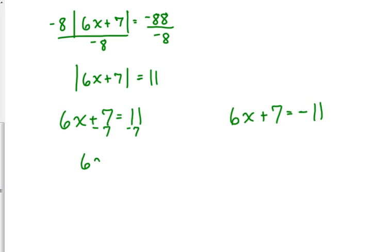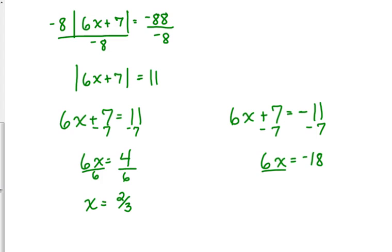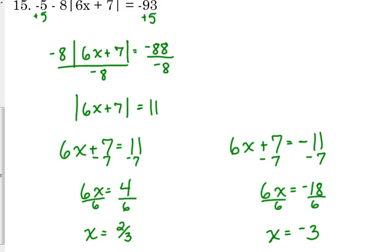Subtract 7 from both sides, then divide by 6, and we get x equals two thirds. I prefer fractions — do not write decimals. For the other equation, 6x equals negative 18; divide by 6 on both sides, and x equals negative 3. Two solutions. It never hurts to check them. I'm not going to go through that process, but they do both check out.